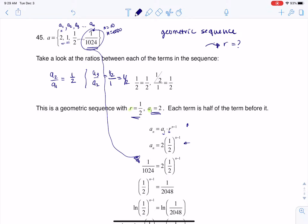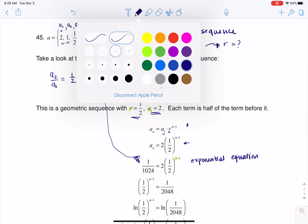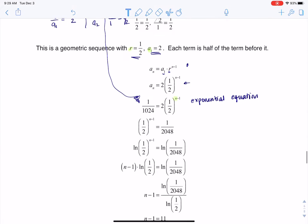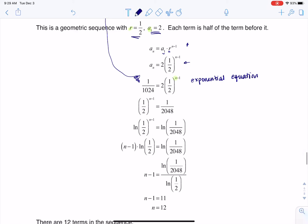I'm going to put that a sub n term as 1 over 1,024. Now once I've done that, we now have an exponential equation. And I say exponential equation because if you look at our variable, and our variable is n this time out, our variable is up in the exponent. So if I have an exponential equation, we're going back to all those techniques we learned about in chapter 6, we're going to go ahead and isolate the exponential term.